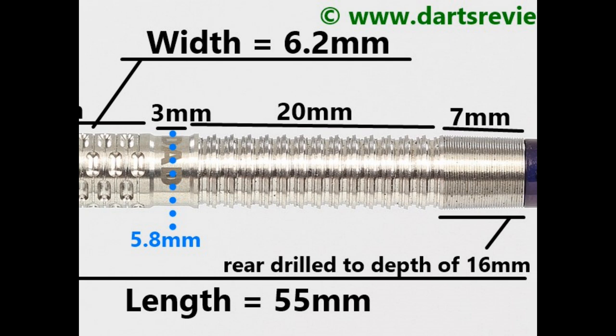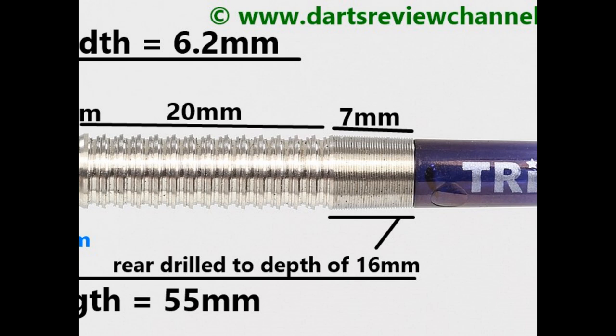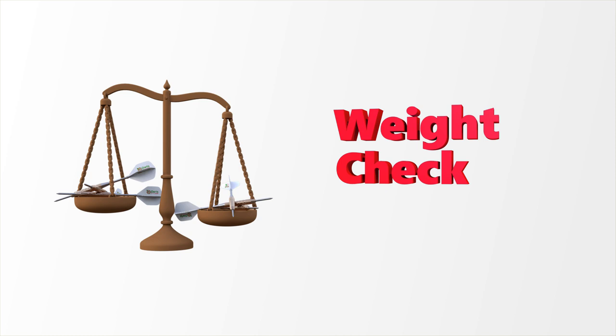Then you've got a scalloped smooth section of 3 millimeters. On the rear it's another interesting grip made of angled rings, that's 20 millimeters. On the end of the barrel you've got a micro grip section of 7 millimeters. Length is 55 millimeters, width is 6.2 millimeters.